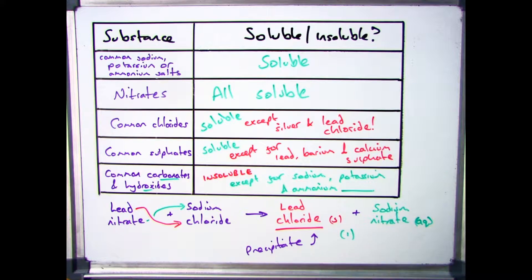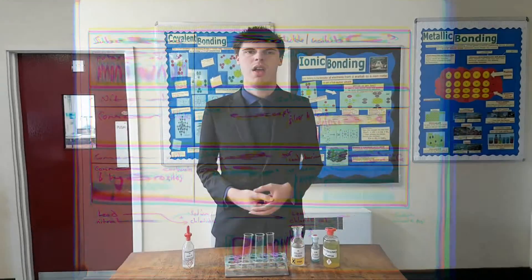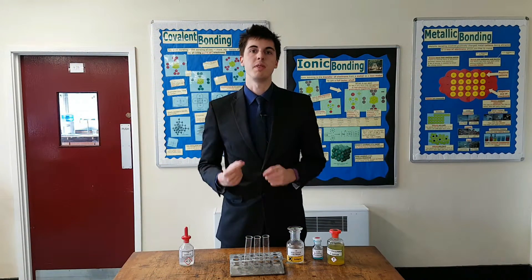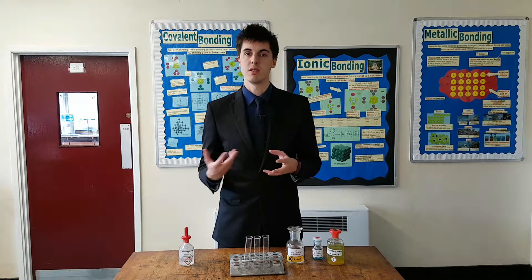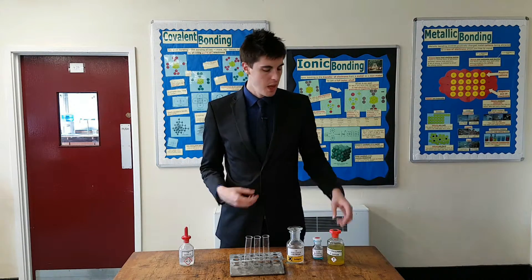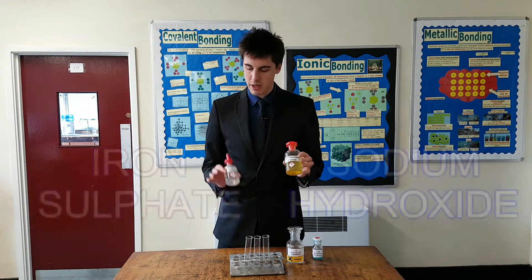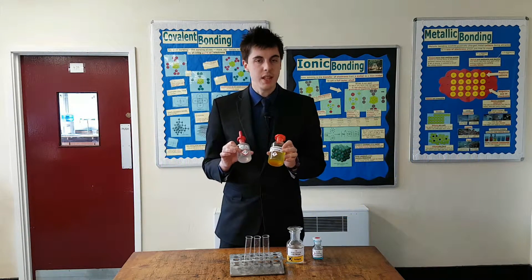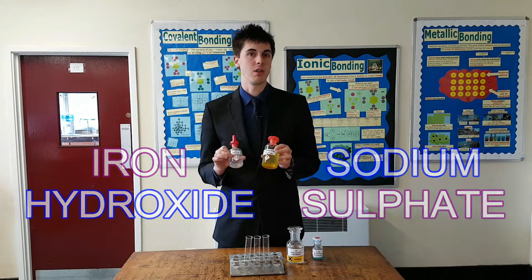What I'm going to do now is put this into practice and prove it to you using some chemical reactions. So if you want to find out if you've got a precipitate in a reaction, what you need to do is have a look at your reactants and then figure out your products. For example, if I take iron sulfate and react it with sodium hydroxide, you take the endings and swap them round, so it becomes iron hydroxide and sodium sulfate.